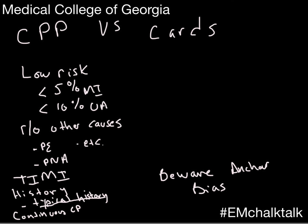We typically take patients that have even a little higher risk than just low-risk, with very classic stories. The difference is when someone has known coronary artery disease — the chances they have coronary artery disease are 100%. That's when history starts making a big difference. For example, a patient with known CAD who had a stent in their left main two years ago, now presenting with progressively worsening exertional chest pain, has a risk of unstable angina far higher than 5-10%.